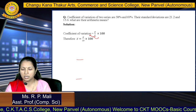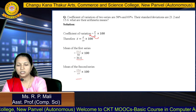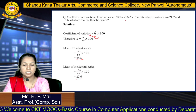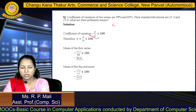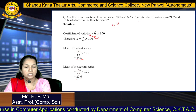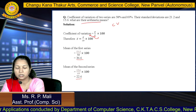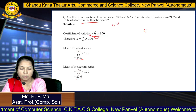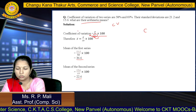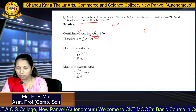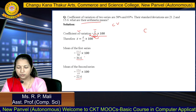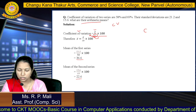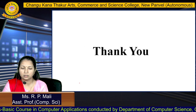Here is another question: the coefficients of variation of two series are 58.58% and 49.69%. The standard deviations are given; we need to find the arithmetic mean. Using the formula CV equals sigma divided by X-bar times 100, we substitute the known values. For the first series, the answer is 36.6, and for the second series, the answer is 22.6. Thank you.